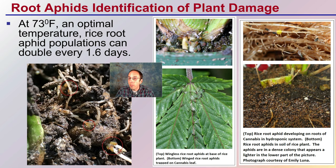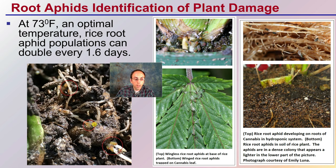We can also see them developing within a hydroponic system — the roots are visible and the aphids can be identified. Within the soil of a cannabis plant, they appear in the lighter lower portions of the picture, which can be difficult to see initially and requires attention to detail. They can be mixed in with the substrate, so careful inspection and scouting is important.